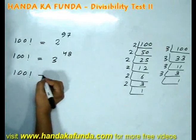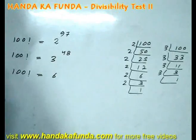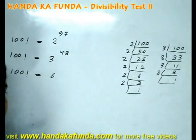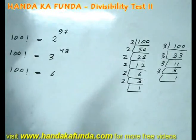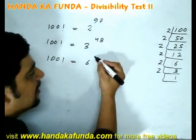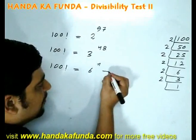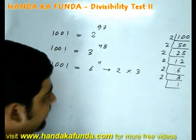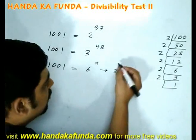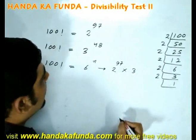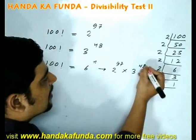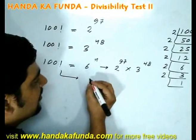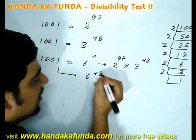What will be the highest power of 6 in 100 factorial? Remember, the repetitive division method is valid only for prime numbers. For a composite number like 6, we need to break it into its co-prime factors — that is 2 and 3. The power of 2 is 97 and the power of 3 is 48. The lower of the two values is the answer, so the highest power of 6 in 100 factorial is 48.